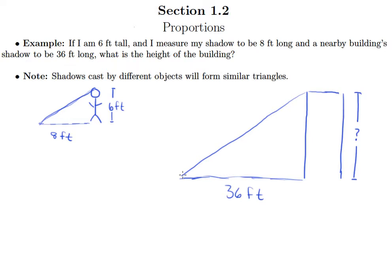And the key here is that shadows cast by different objects will form similar triangles, obviously if it's at the same time of day.